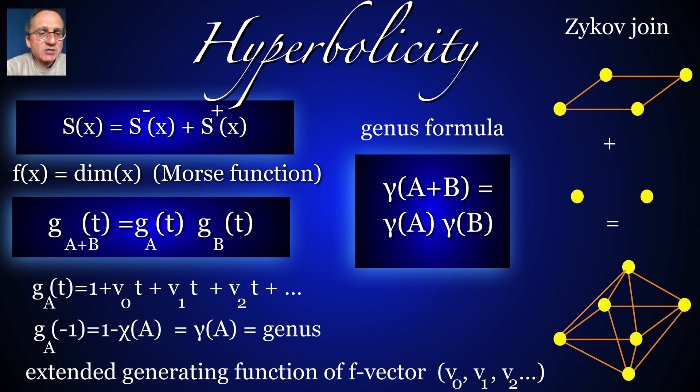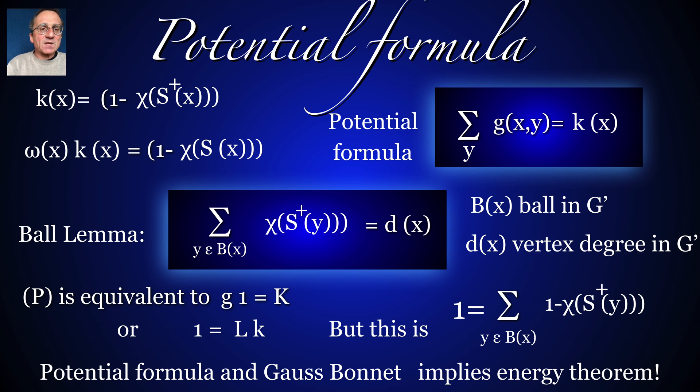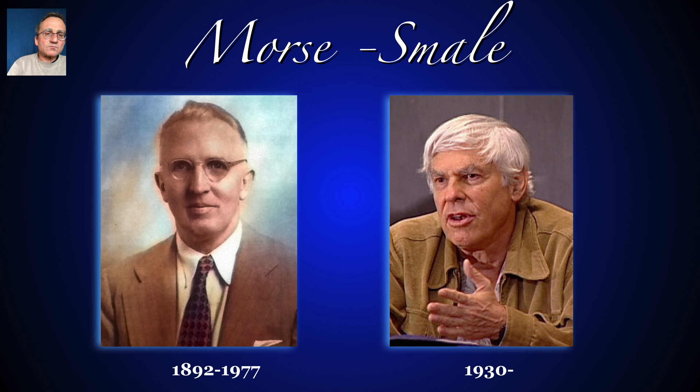First of all we can add two graphs. This is called the join. It has the same properties like the join in topology. The join of two spheres is a sphere. The join with a two-point graph is a suspension. If we find the generating function of a complex and now we take the join, then generating functions multiply and the genus also multiplies. So here's a key formula that tells that the potential is curvature and the potential is just the sum over all possible potential values coming from the other simplices. And in order to verify this one can then use the Gauss-Bonnet theorem.